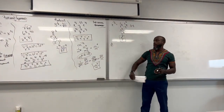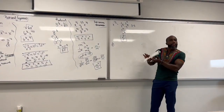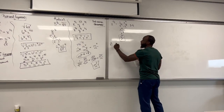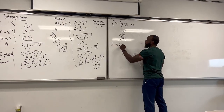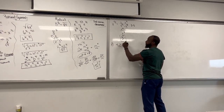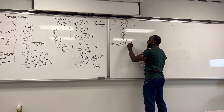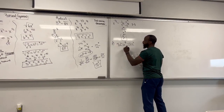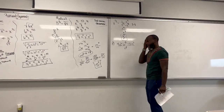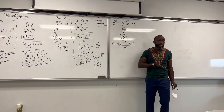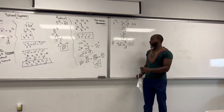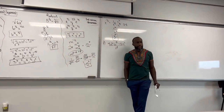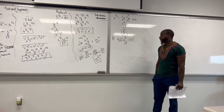Now we're going to incorporate all of this stuff into an actual problem. So we got 4a squared b to the negative 2 over 3 power minus 5a squared, all over b to the 1/3 power. So in this particular case, the first thing you do is you got to get rid of that fraction in the denominator.